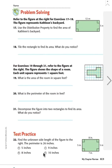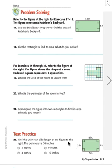We notice that the area when we just counted the whole thing was 16, and when we did the composite it was also 16 — meaning we're probably right because we came up with the same answer for both questions. Now let's go to the test practice. Number 22 says find the unknown side length of the figure to the right — the perimeter is 26 inches. We can see this side is 5, this side is 5, and this side is 8. So obviously the unknown side has to be 8 inches, which is answer B.